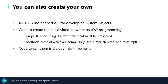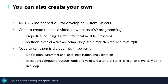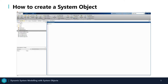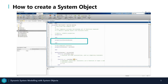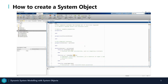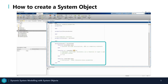The code to call system objects is divided into three parts: the declaration, where parameters and states are initialized; the execution, where the outputs and states are computed, typically done in a loop; and finally termination, where the resources are released, enabling objects to be set again. To create a system object, you can use one of the MATLAB templates found in the home tab. The first thing you'll need to do is define the properties, including the discrete states that must be preserved, and then the three compulsory functions: setup implementation, step implementation, and reset implementation.